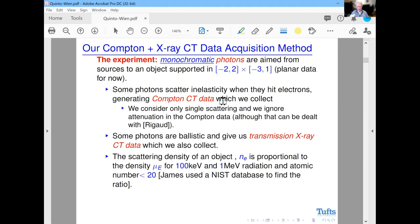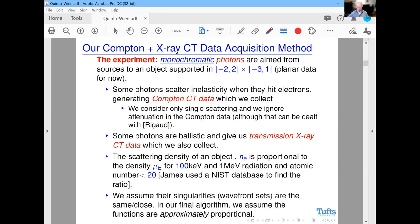Here's some physics compliments of my engineering buddies. The scattering density of the object, which is one of the quantities we want to understand, one can show that it's essentially proportional to the density of the object, at least if you have 100 kEV or 1 MeV radiation. We're not exactly going to assume that n_s and n_e are proportional, but we are going to assume their singularities, namely the wavefront set, are the same or close. That'll be a fundamental part of our final algorithm.